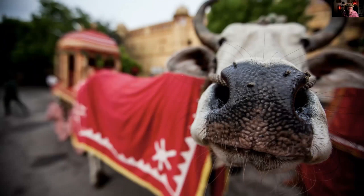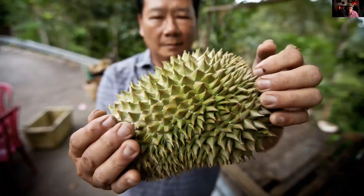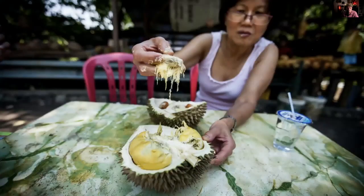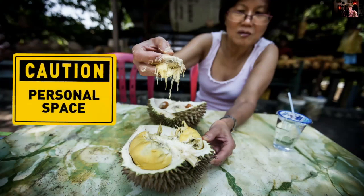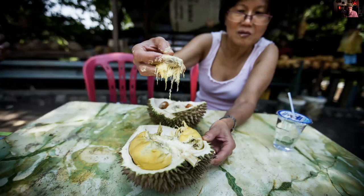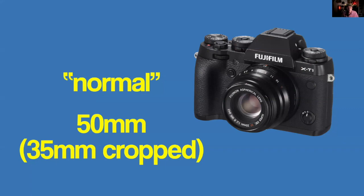Distortion is something to be careful of, but you can also use it — to exaggerate, create comical images, or accentuate a subject. Here the man is holding a durian and I wanted to focus on the durian, so it takes up most of the frame using wide angle distortion for that purpose. But be careful — with a wide angle you're invading personal space getting close to your subject, so you might get durian on your lens.